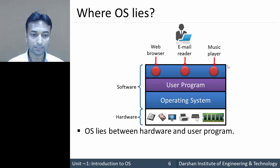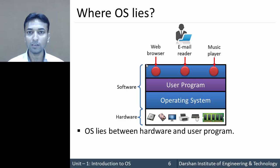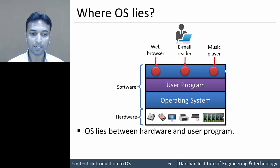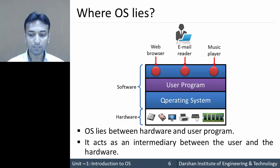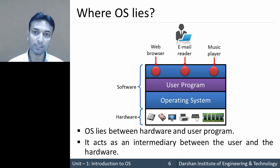In this architecture, the operating system lies between the hardware and the user programs. User programs are application programs used by the user to perform particular tasks — for example, a web browser, email reader, or music player. The operating system lies between the hardware and these user programs, acting as an intermediary between the user and the hardware, and between user programs and hardware devices.